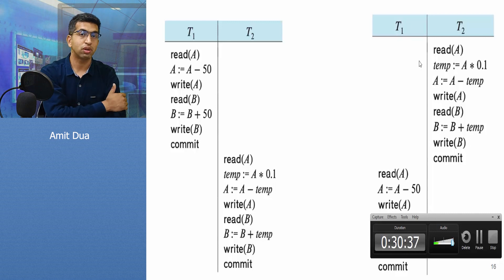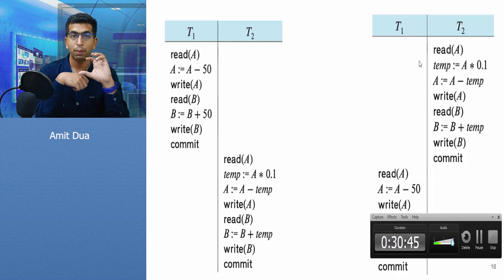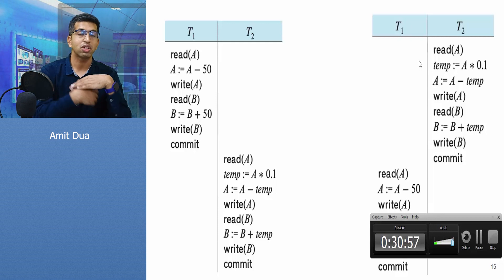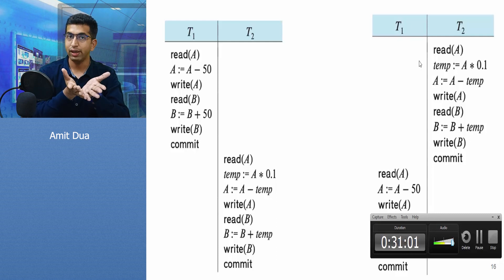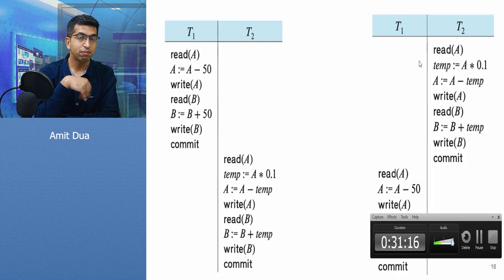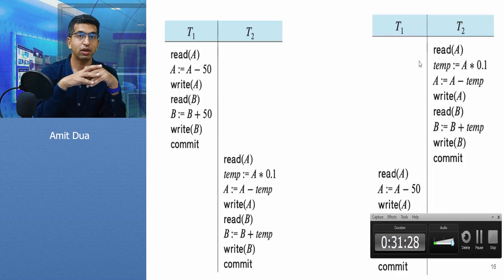Even though individual transactions are the same, two different orderings are two different schedules. If one transaction completes before the next one starts — that is, transaction one commits before transaction two starts, or vice versa — then the ACID properties are guaranteed. Because if there is a failure, either the transaction has already committed or it has not, and if not, all instructions are rolled back. So if two transactions are working one after another, they will always follow the ACID property.